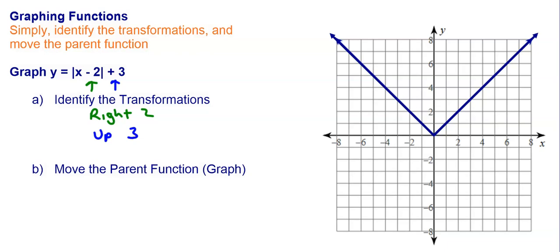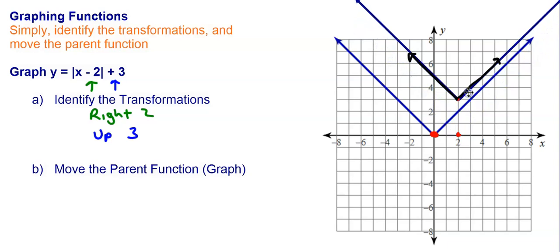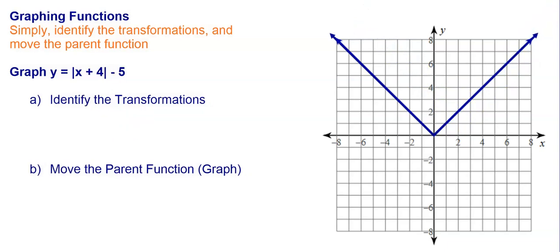Now all we do is simply move that vertex right 2 and up 3. So I'm going to go right 2, and then I'm going to go up 3. And so the graph of y equals the absolute value of x minus 2 plus 3 is going to be right there. You can confirm this by graphing it on Desmos. What we're doing is literally transforming the parent graph by moving it right 2 and then up 3, and all the points on that graph move the same amount. Let's look at another one.